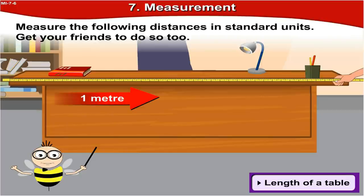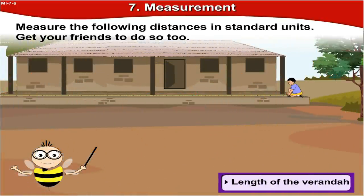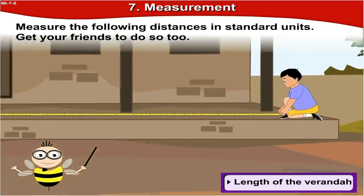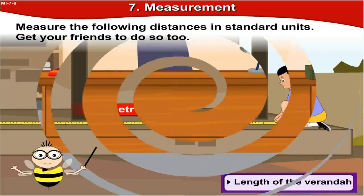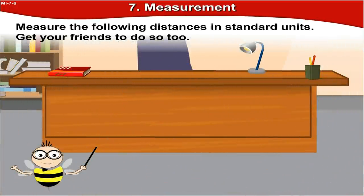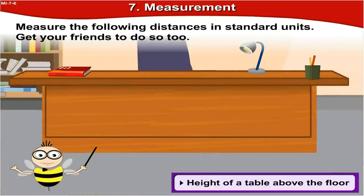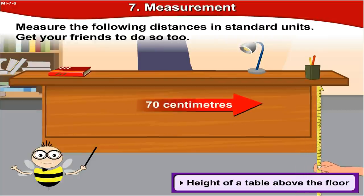Similarly, let us measure the length of the veranda — it is 2 meters. Now, the height of a table above the ground — let us measure it. It is 70 centimeters.